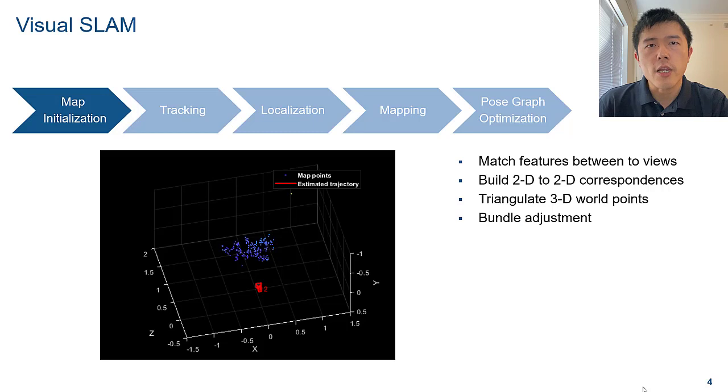Then you can use triangulation to obtain the 3D world points corresponding to matched image points. To refine the reconstruction, you can use bundle adjustment that minimizes reprojection errors.